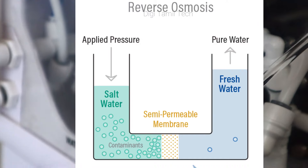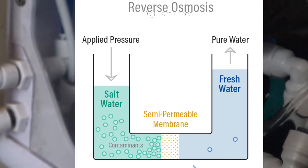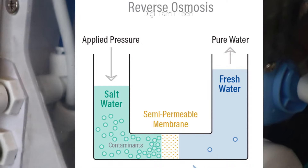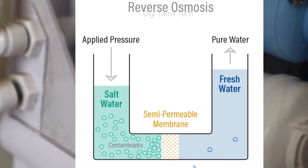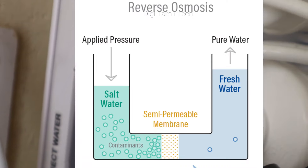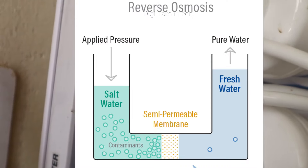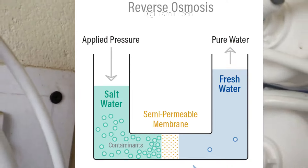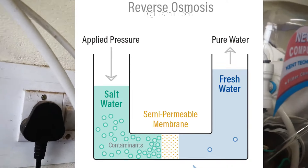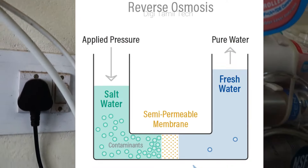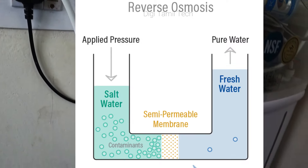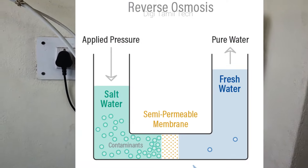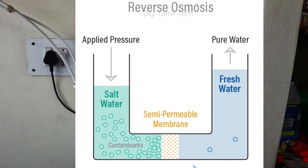First, we have salt water in a pipe and we apply pressure. There is a filter — let's say there is a filter in the water. We will filter the salt water through this filter, and then we will filter the water purifier output. That is the reverse osmosis process.